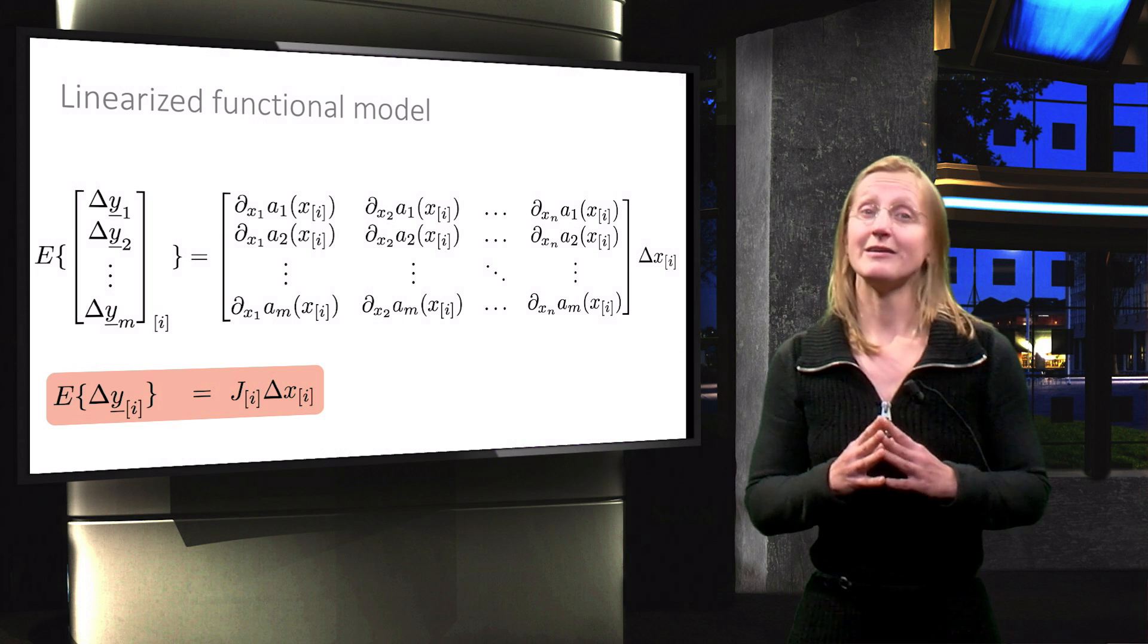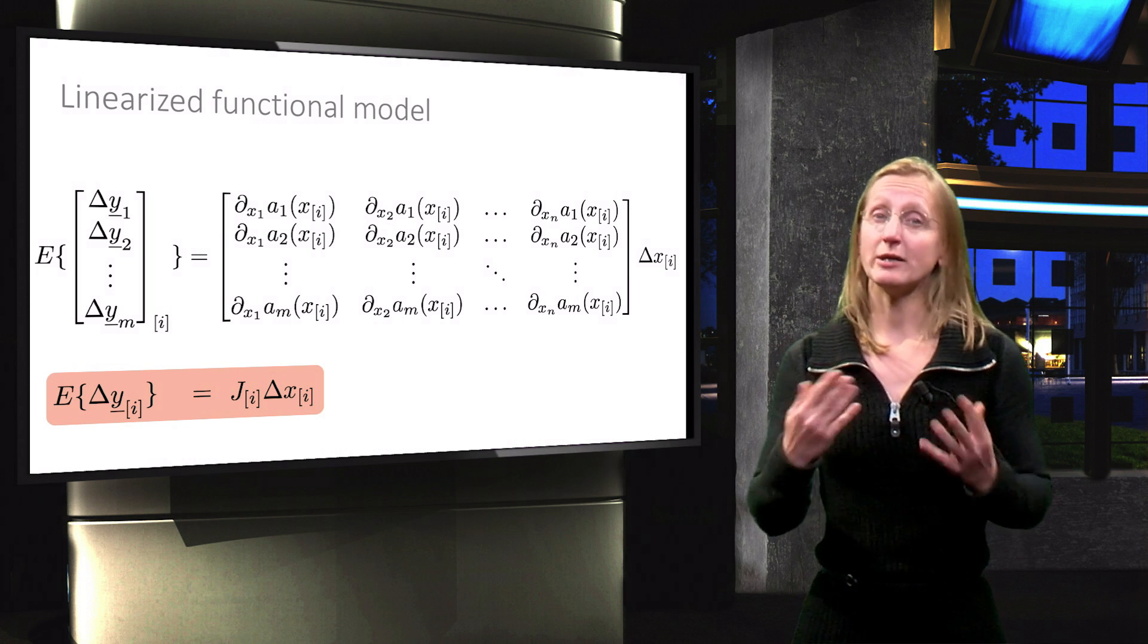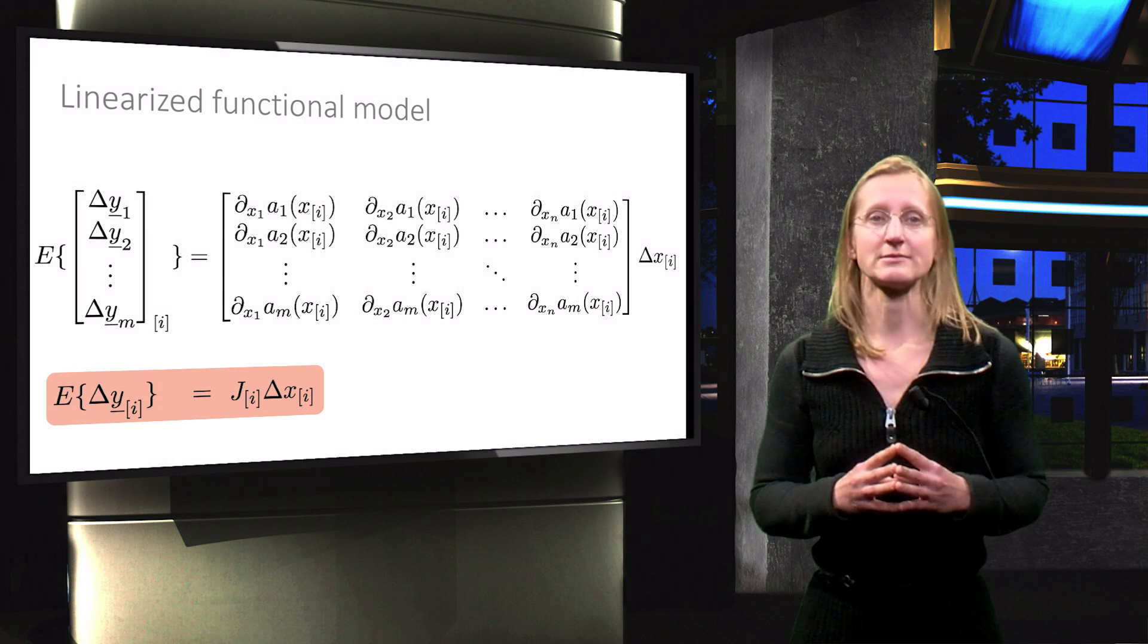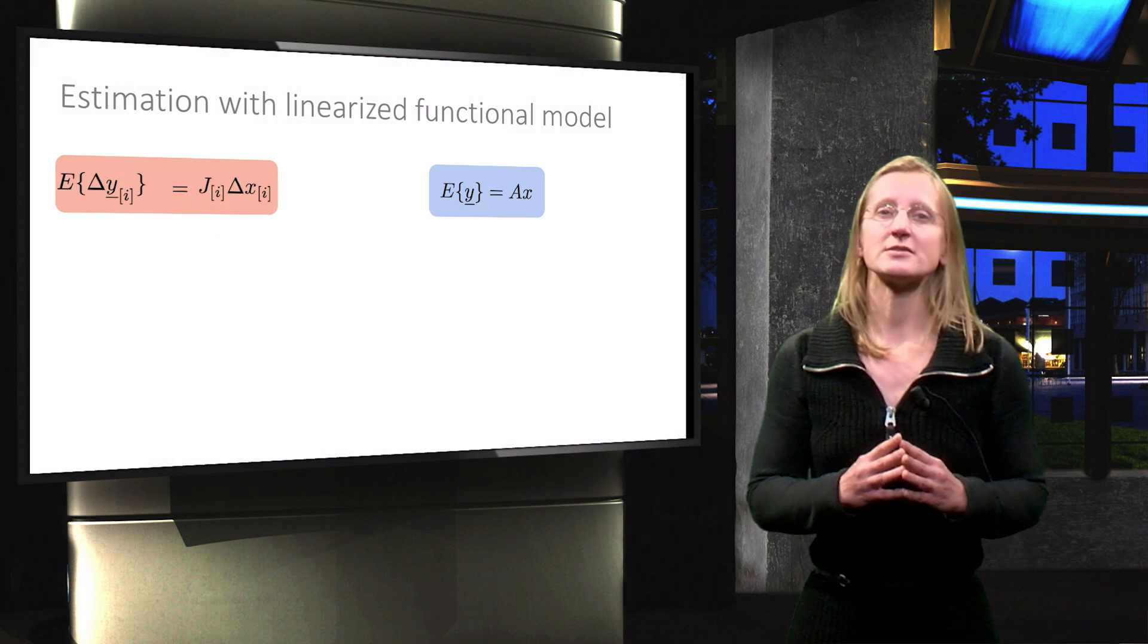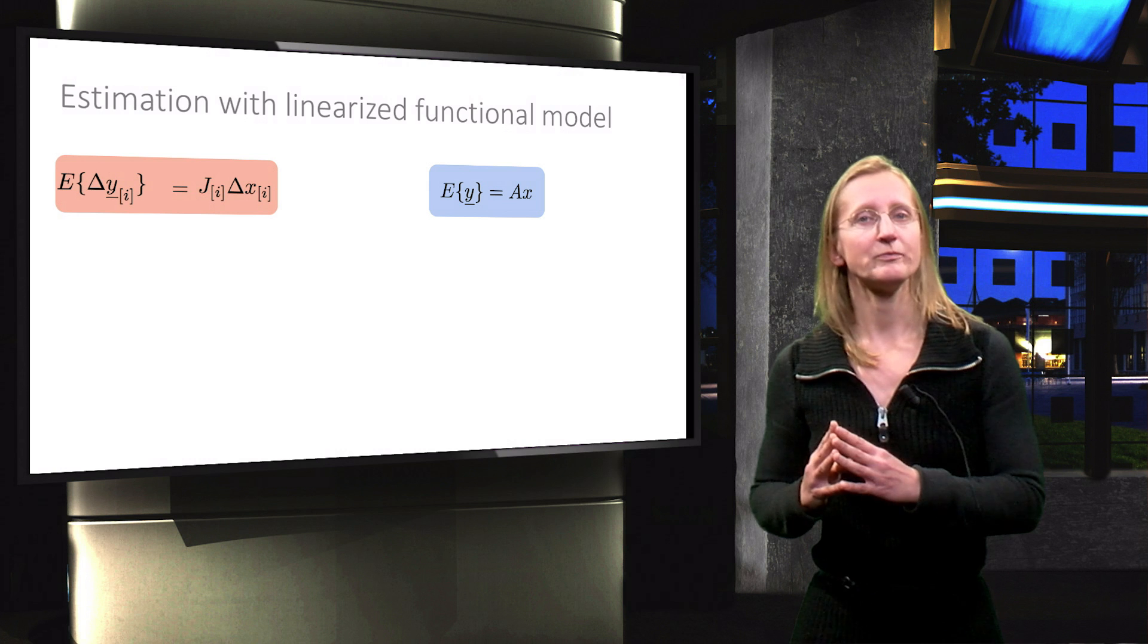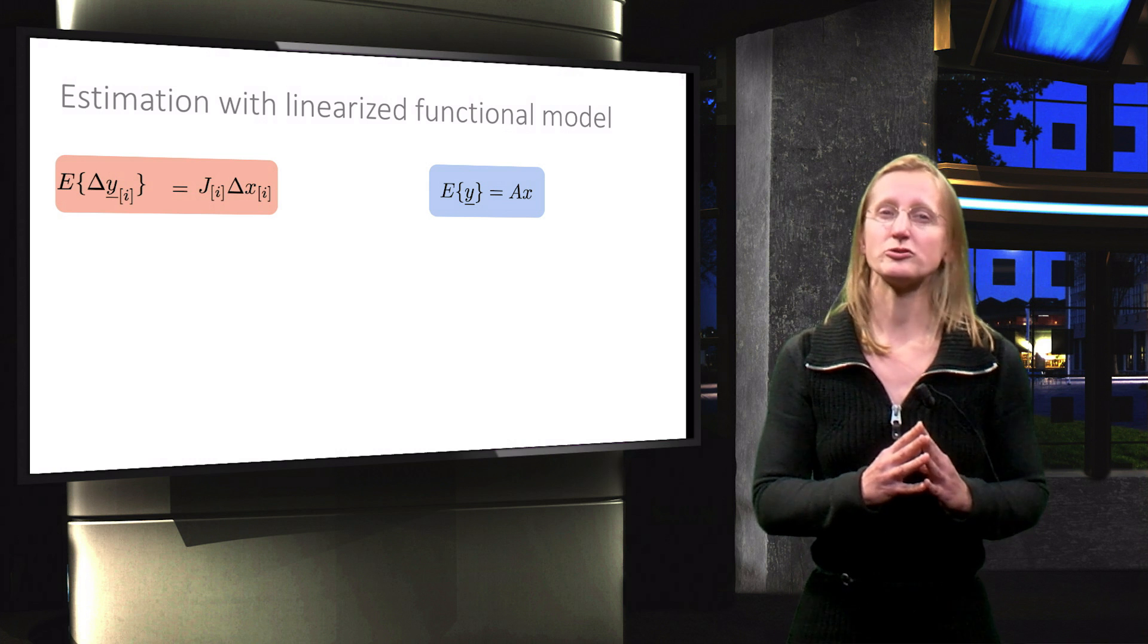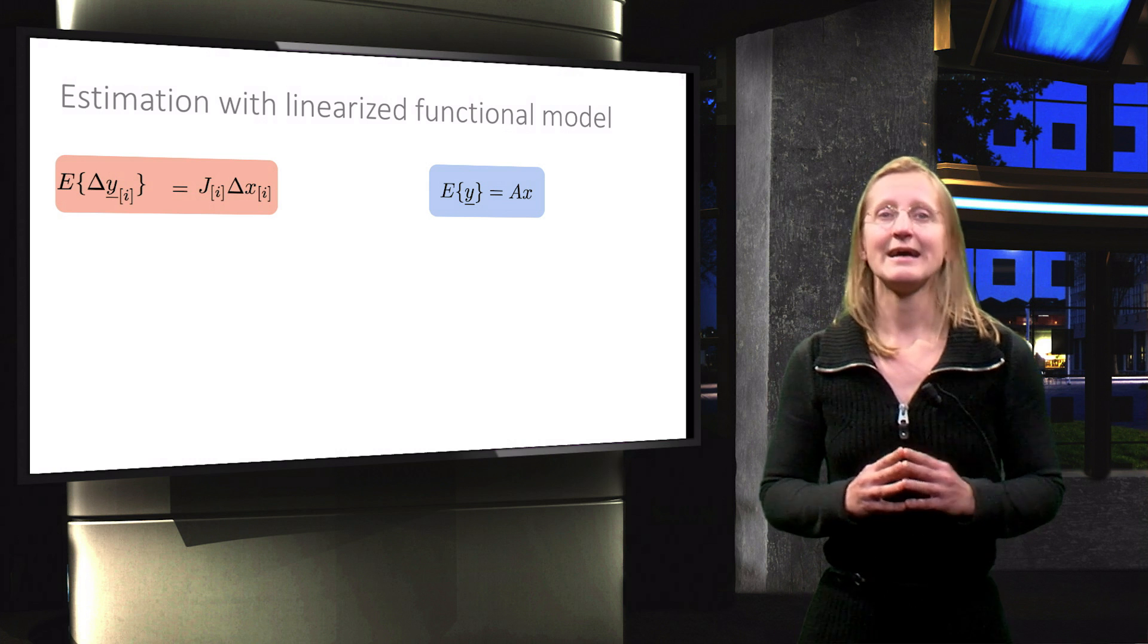Now that we have a linear model again, we are able to estimate the vector delta x. To see this, compare the linearized model with our default linear model shown on the right. And see the similarity.